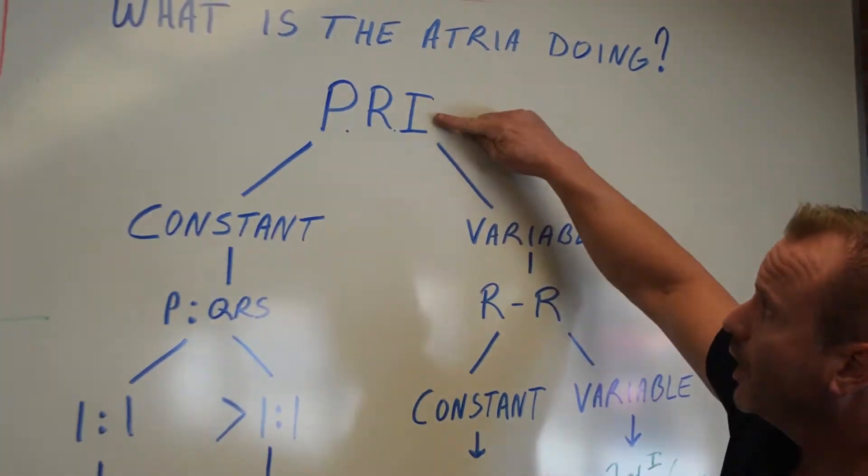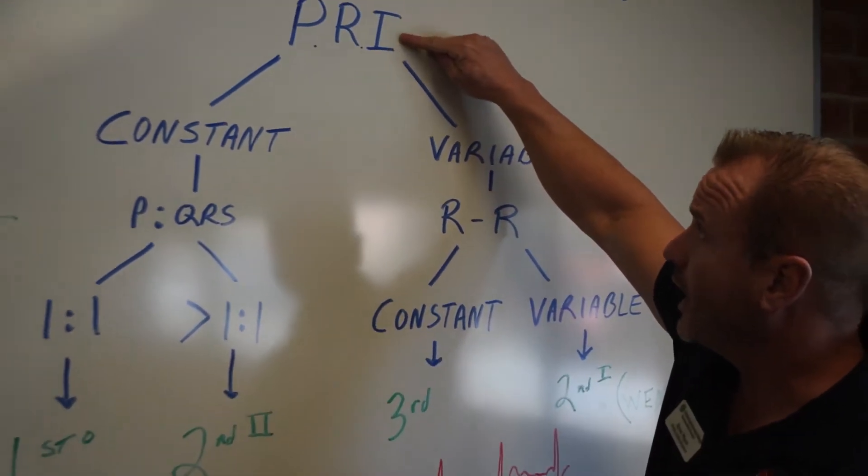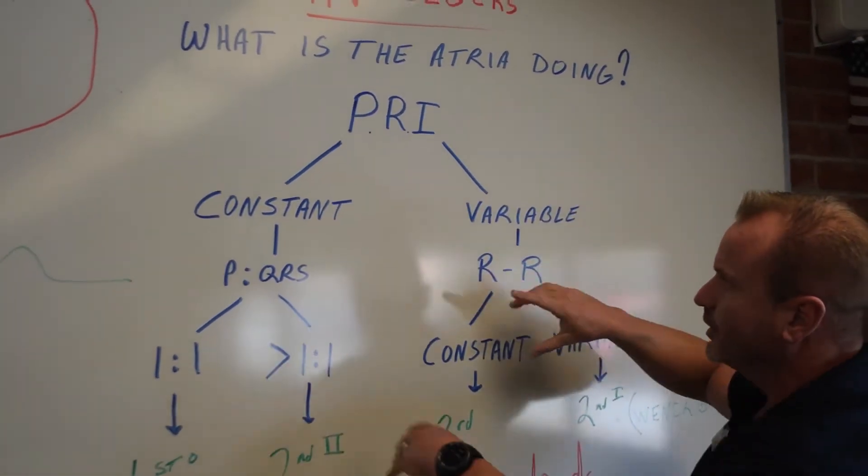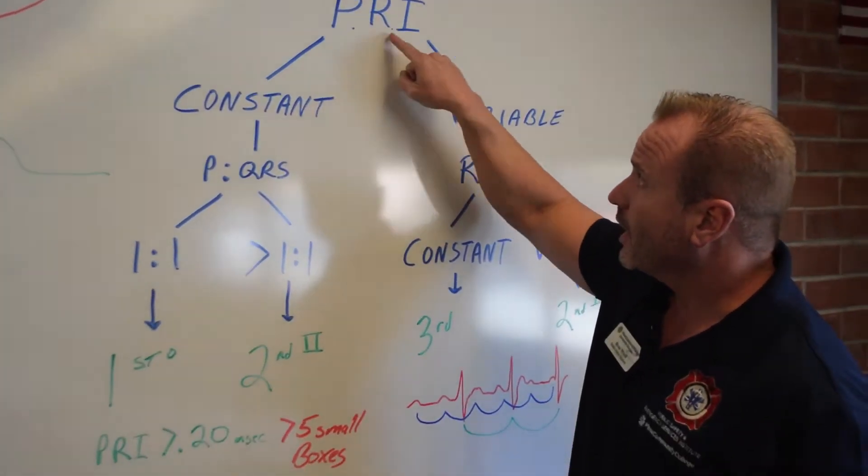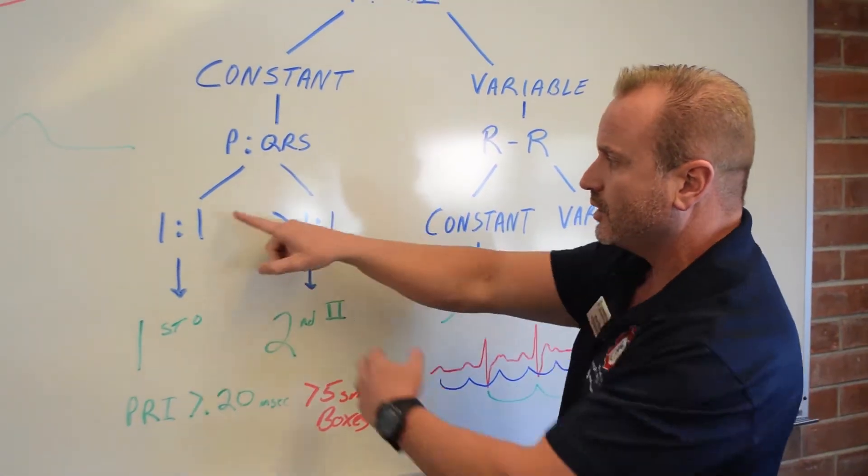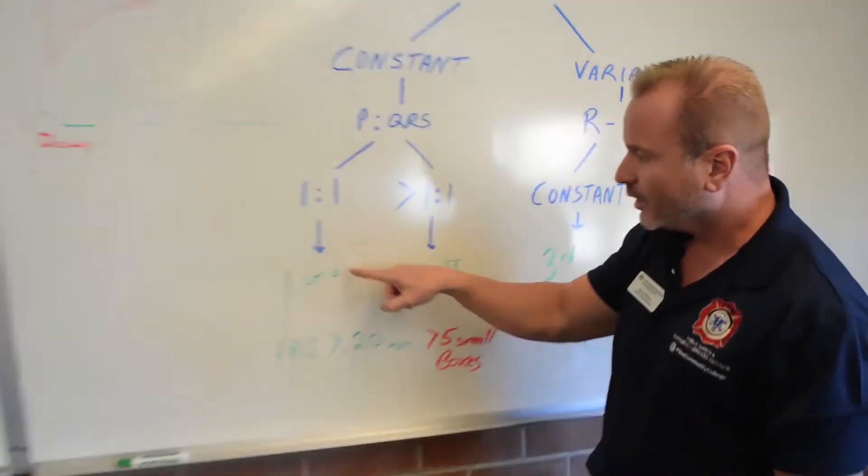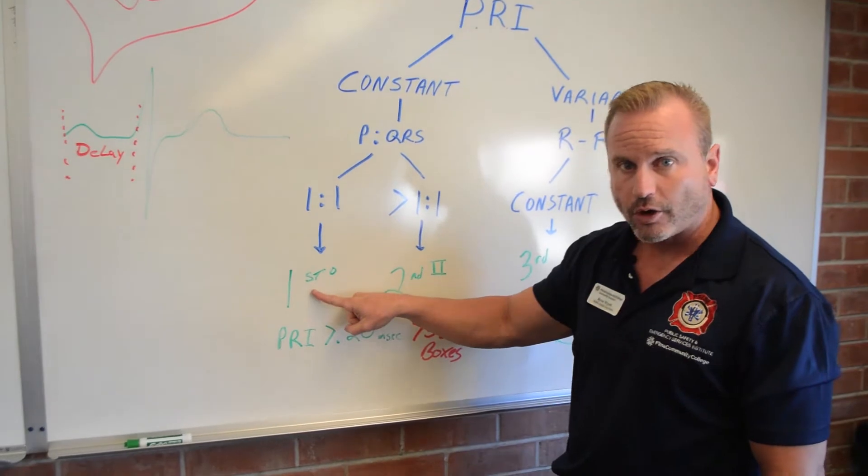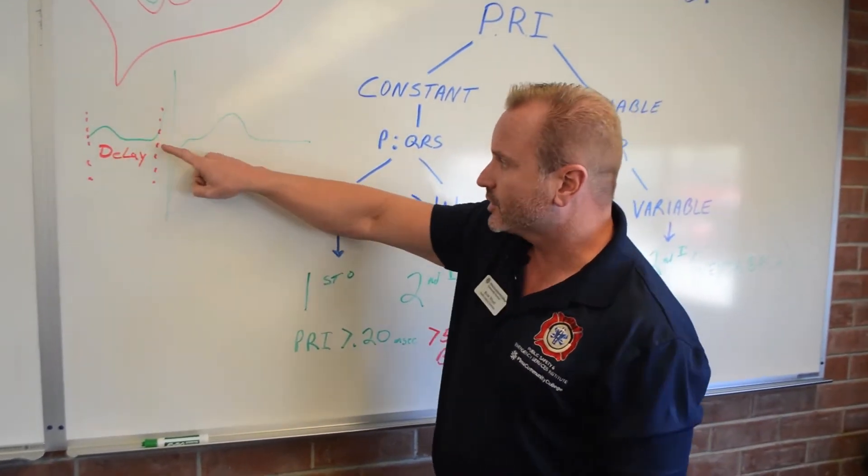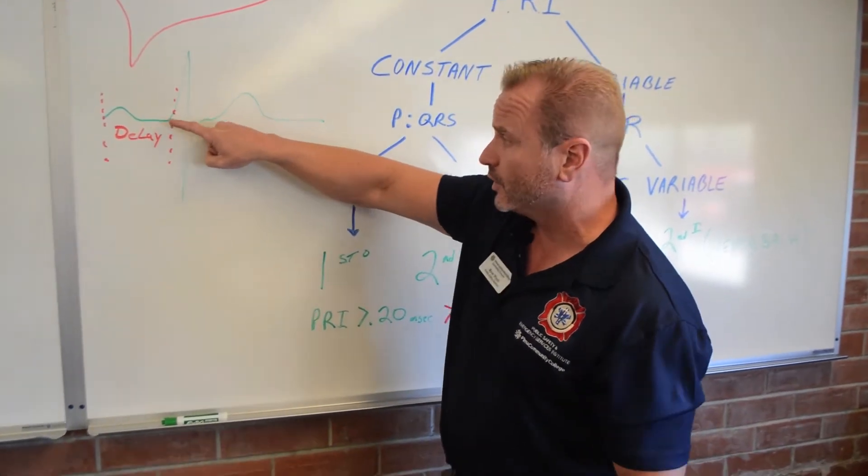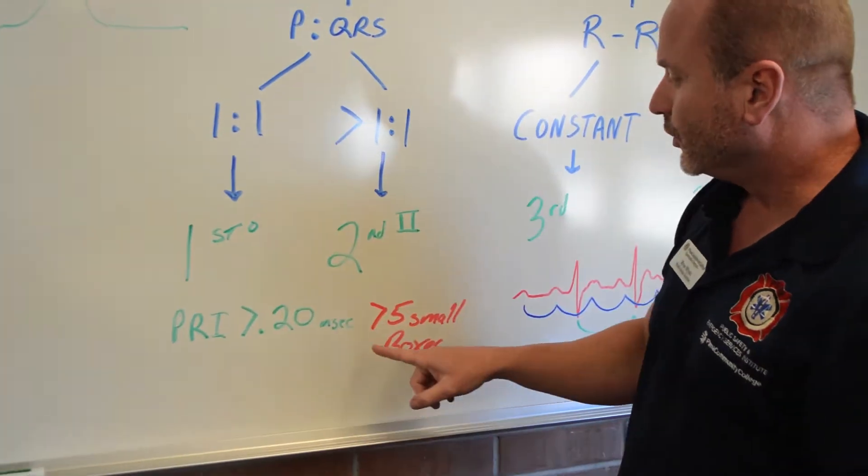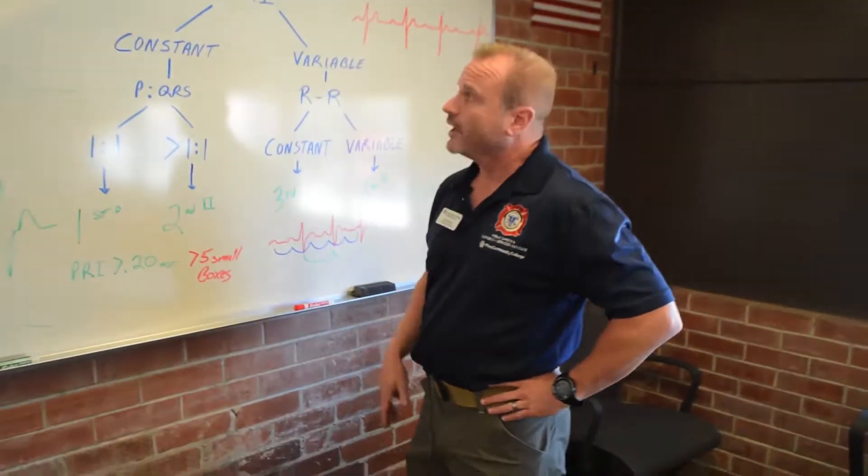So we come back to the board. What is our PRI? What is our interval? What is the atria doing? Break it down very simply. If the PRI is constant, so that means there's one P for every QRS. It's just delayed. It's a first degree block. So I have a P wave. I have a QRS wave. There's just a delay over 0.20. It's a first degree block. And like I said, we really don't do anything about that.